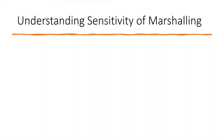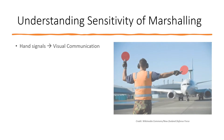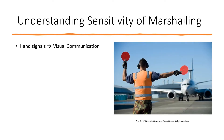Aircraft marshalling is the activity of guiding the aircraft on the ramp with the help of hand signals, establishing a visual communication with the pilot. When the aircraft enters the ramp, a marshaller guides the aircraft to come straight ahead, turn left or right, slow down, and finally stop.